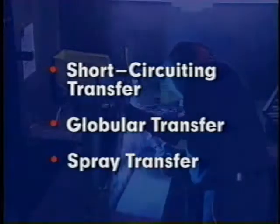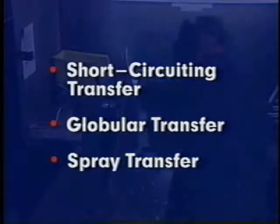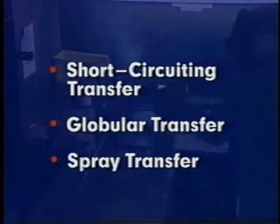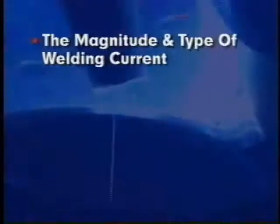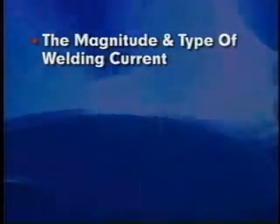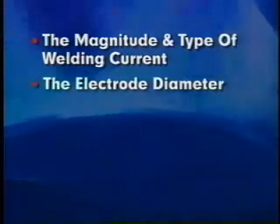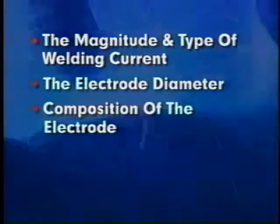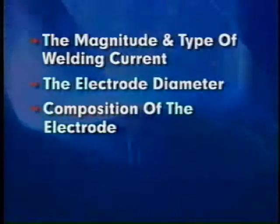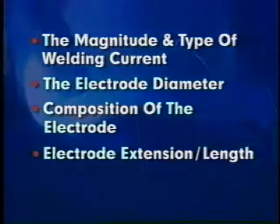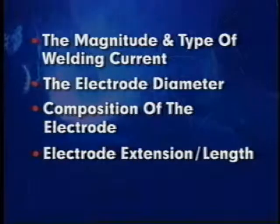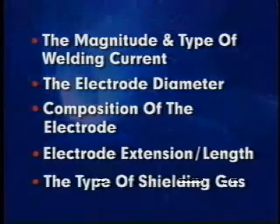The type of transfer is determined by a number of factors. The most significant include the magnitude and type of welding current, the electrode diameter, the composition of the electrode, the electrode extension or length, and the type of shielding gas.